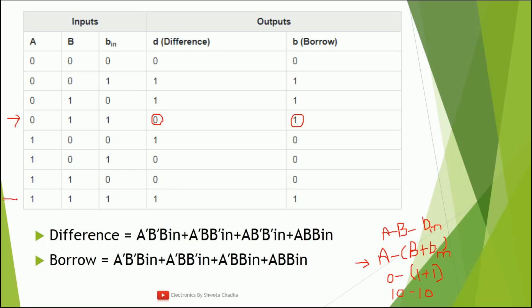Let me perform another example from the truth table: the entry one, one, one. One plus one is ten (binary). We want to subtract a higher value from a lower value, which requires a borrow. When we take a borrow, the original zero becomes ten, and one becomes eleven. Eleven minus ten equals one. Hence you can verify and simplify the truth table yourself without memorizing.